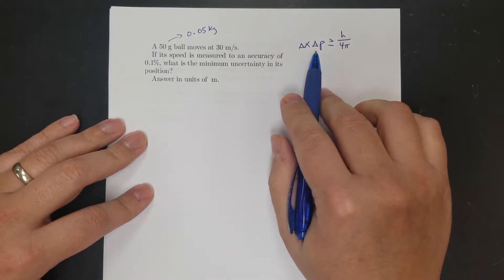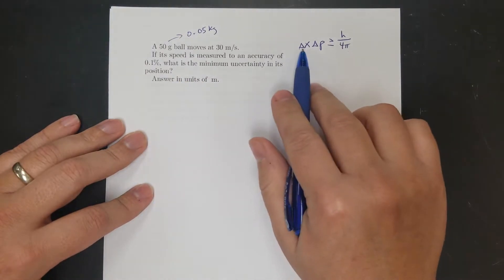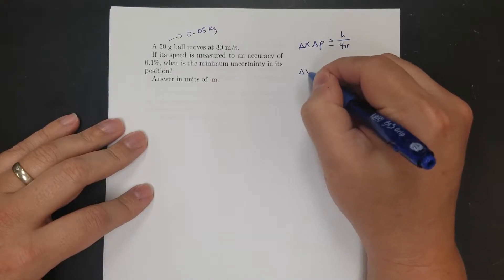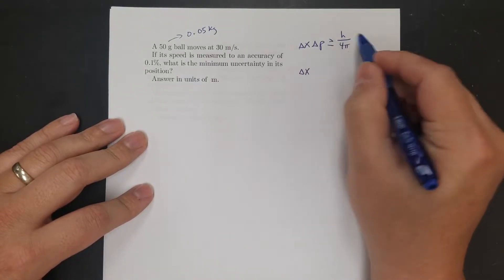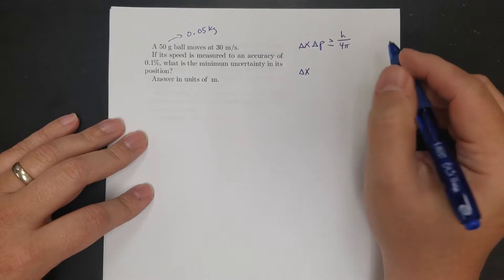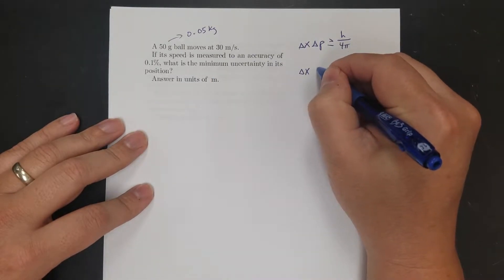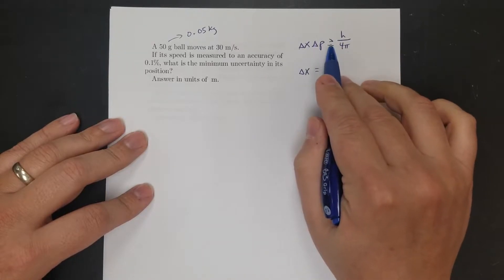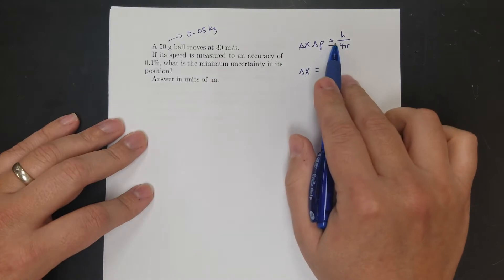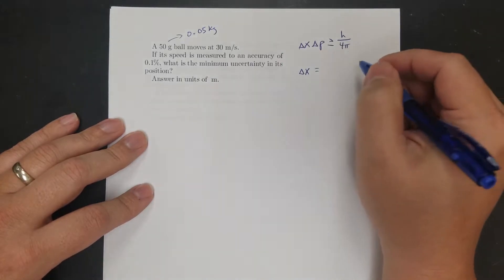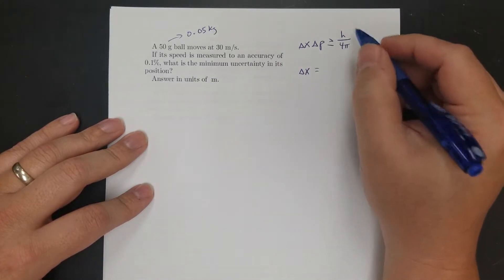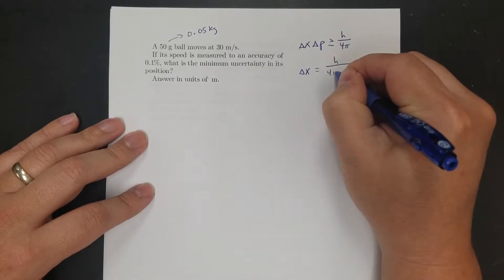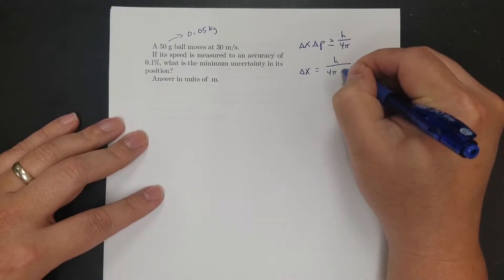I'm going to solve for the uncertainty in the position. Let me rearrange this: delta x equals h over 4π times the momentum uncertainty. Because we're finding the minimum, I'm just going to use the equal part of that inequality.